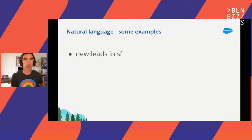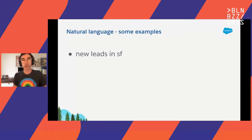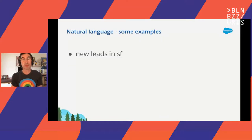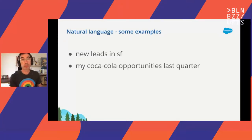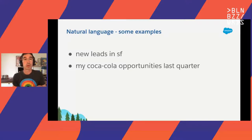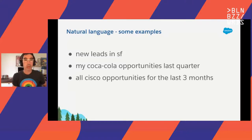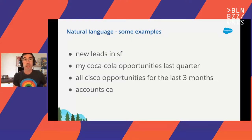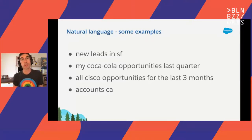Let's look at a bunch of examples. "New leads in SF" — I chose it explicitly to be simple because it's actually not so simple. Here, the term "new" maps to custom values inside the organization metadata. Another example: Coca-Cola is customer data — it may mean one of dozens of accounts for this organization. And even "my" can have different meanings for different companies. Here is another example with a variation of syntax. And a last example with very short, very few context in this query: "accounts CA" means accounts in California.